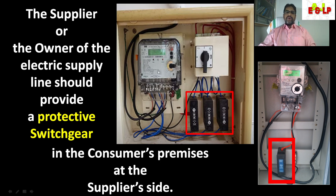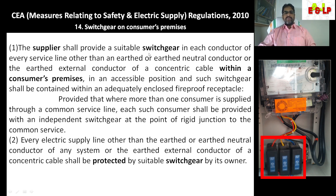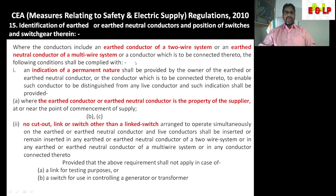To the supplier side of the connection, there must be a protective switchgear. We have our safety regulations, CEA, which relates to safety and electric supply. According to Regulation 14, second clause, there must be a switchgear provided by the supplier before the point of commencement of supply, and it should be of protective type. In short, there must be a protective switchgear provided at the consumer premises by the supplier.